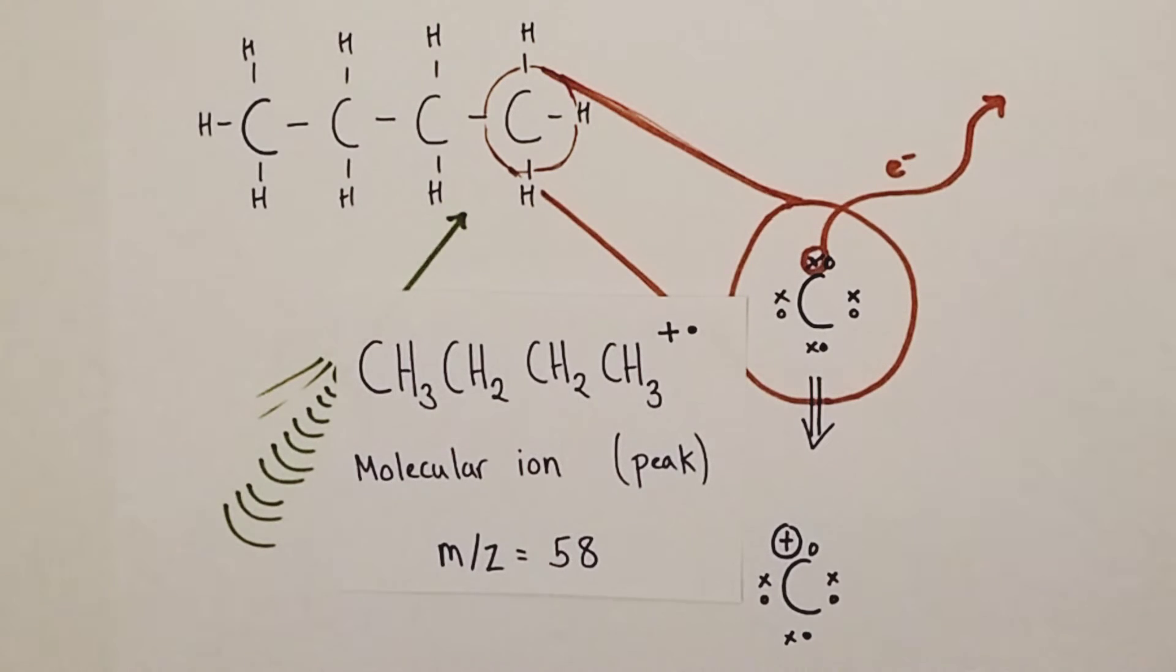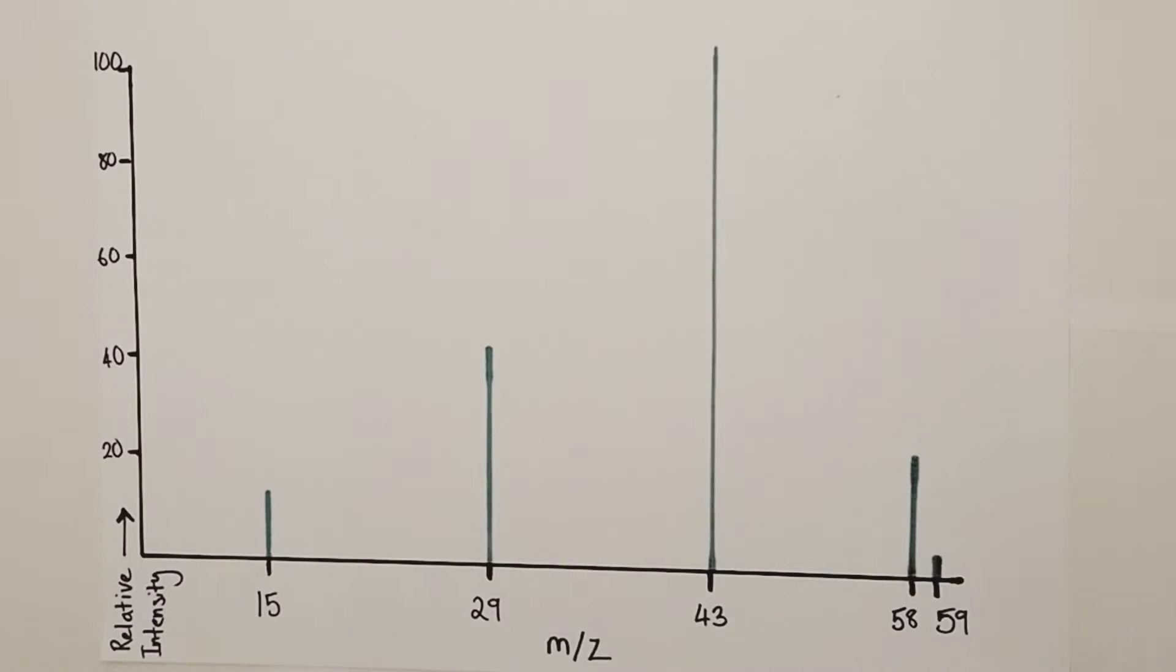If only it were that simple. But when we come back to our spectrum, we can see there's a lot more going on here than just that peak at 58. We actually have other peaks at mass charge ratio 43, 29, 15, and even a small peak at 59, implying that there are species in this mass spectrometer that have relative masses of 43, 29, 15, and even 59, respectively. So when you think about what's going on there a little bit later on, something called fragmentation is taking place.